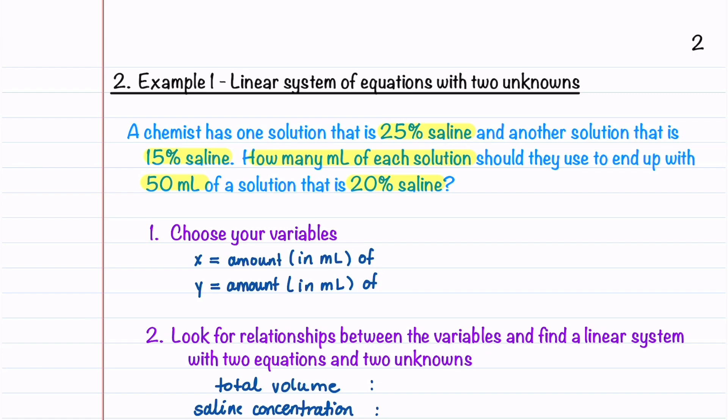The first step is to choose our variables. Let x be the amount in milliliters of 25% saline. We'll let y be the amount in milliliters of 15% saline.